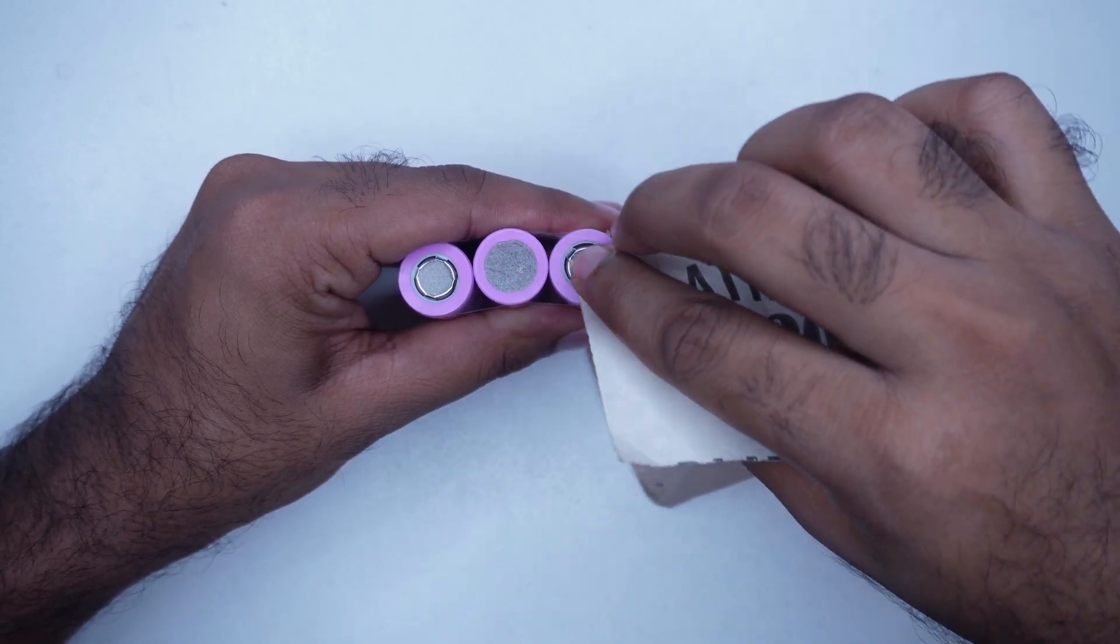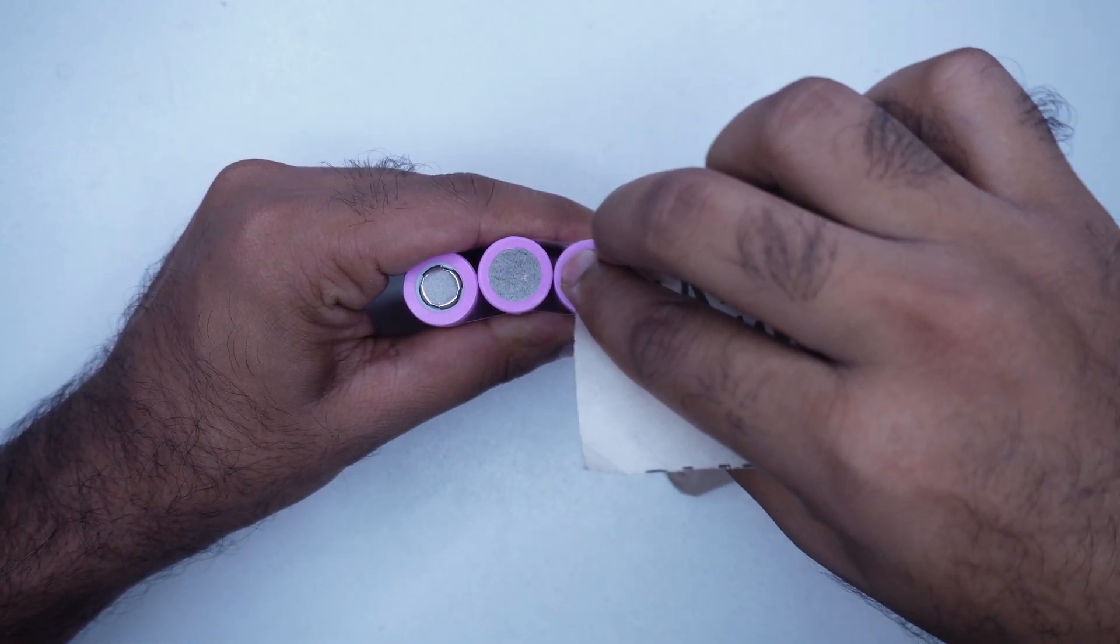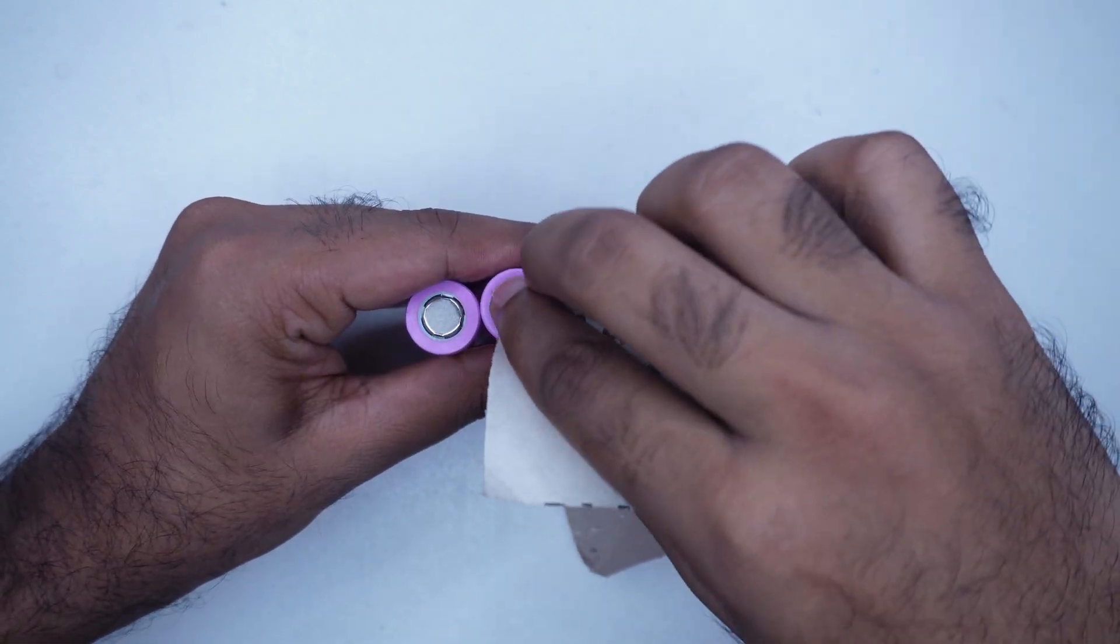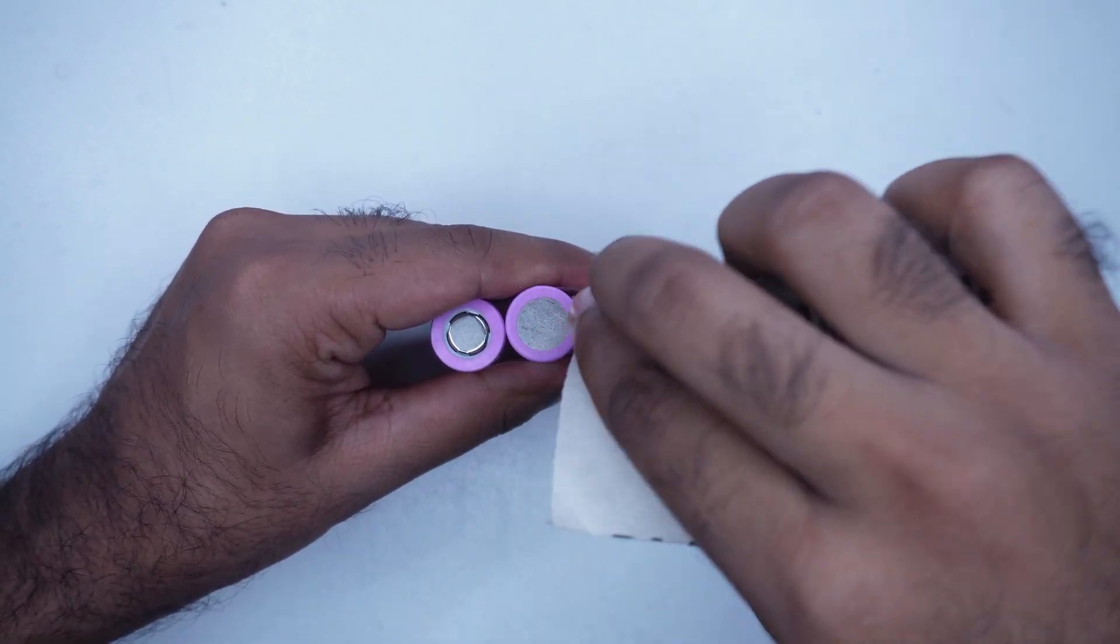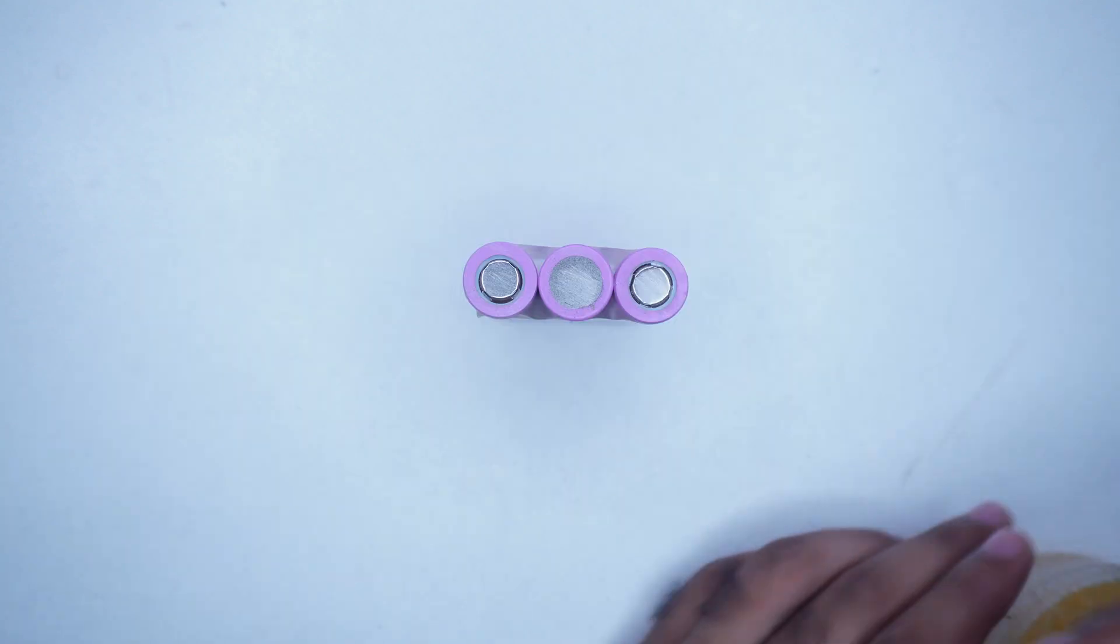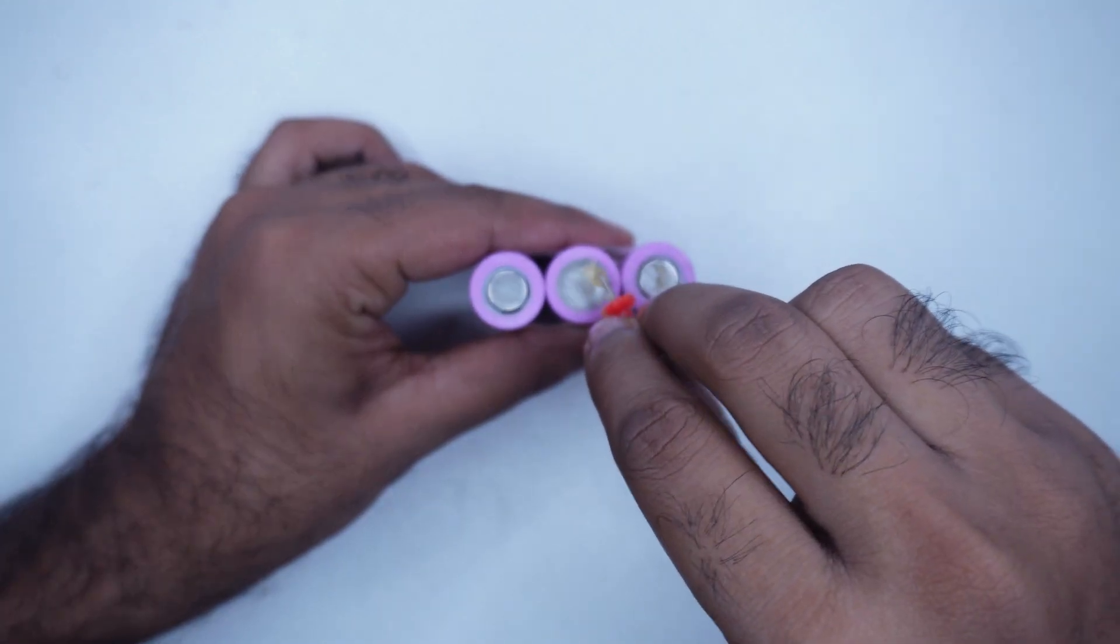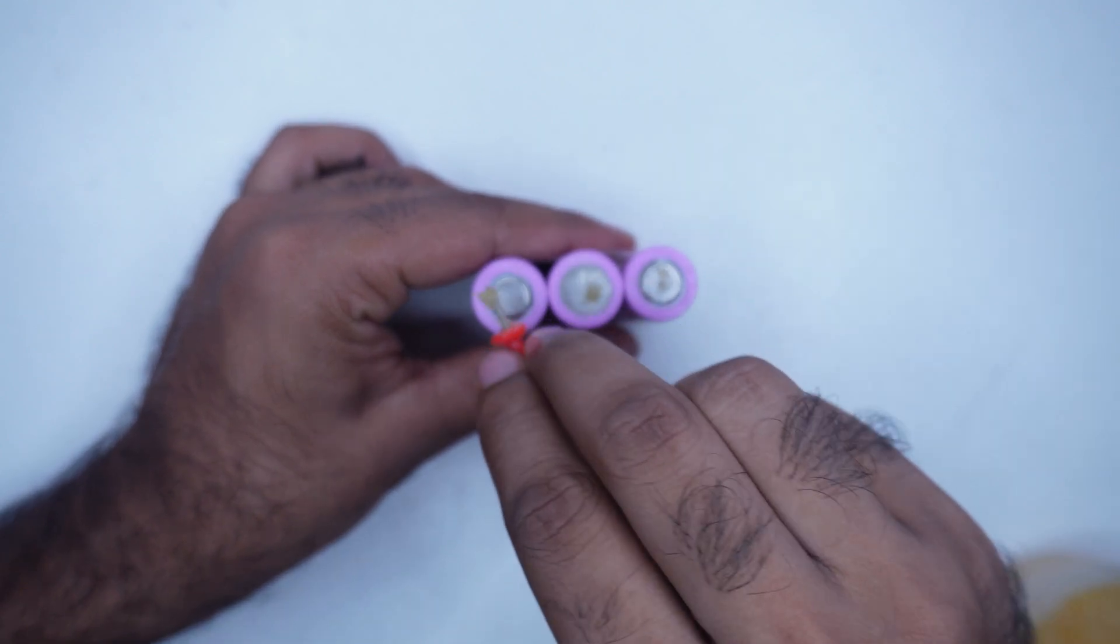I have been sanding the terminals a bit with sandpaper to help the soldering leads hold to the battery terminal. Also, if you apply a little soldering paste to the terminals, the lead can be easily held to the terminals while soldering.